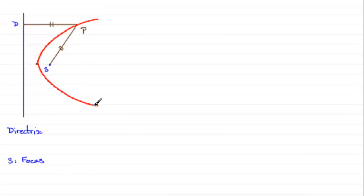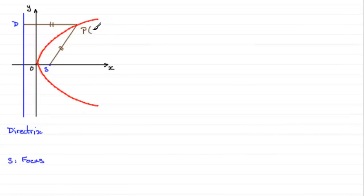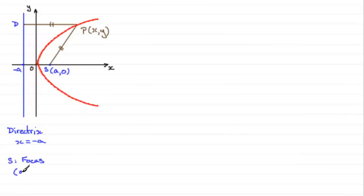If we introduce axes with the origin at the midpoint between S and the directrix, then point P has general coordinates x, y. The focus S is at the general point (A, 0). That means the directrix crosses the x-axis at minus A, so the equation for the directrix is x equals minus A, or x plus A equals zero, and the focus has coordinates (A, 0).